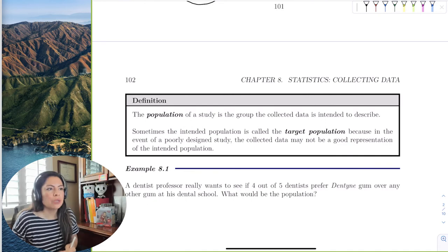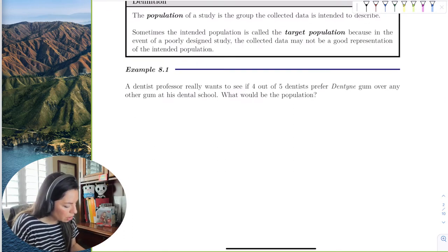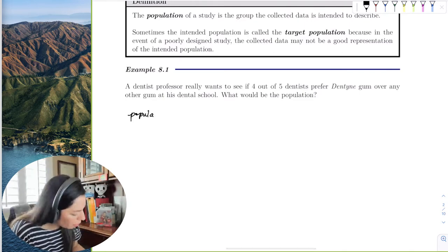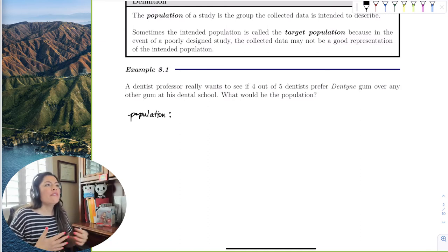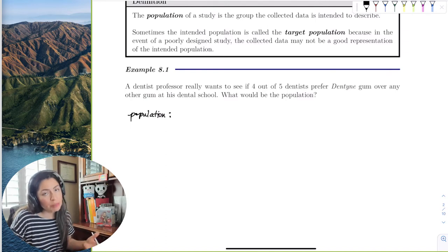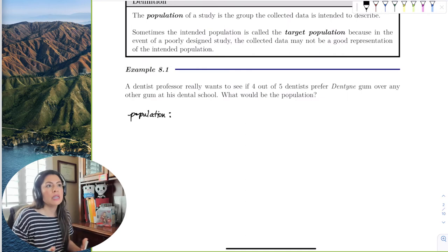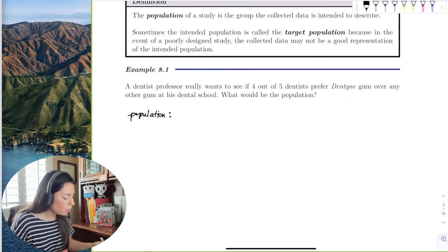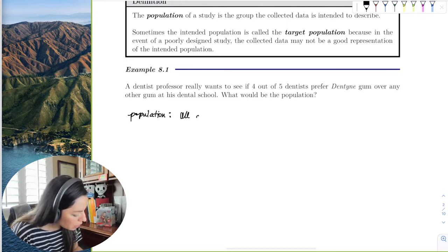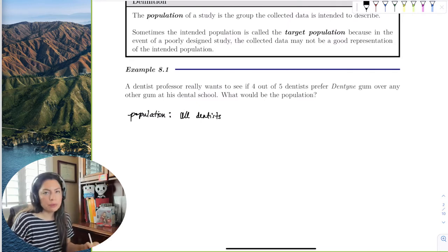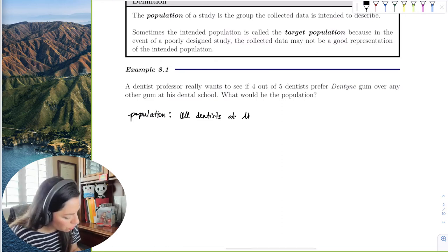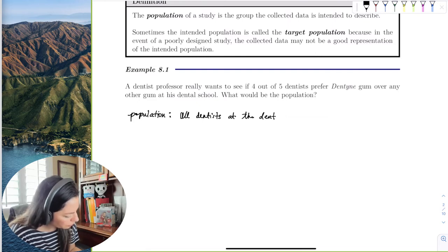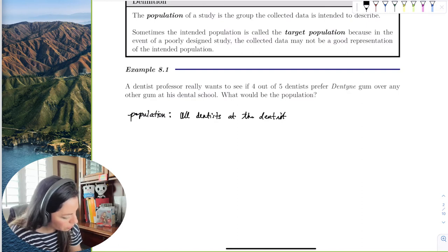For example, a dentist professor really wants to see if four out of five dentists prefer Dentyne gum over any other gum at his dental school. What would be the population? The population is everything - all dentists all over the world. So if you were a dentist professor, this person may not be a practicing dentist but actually is teaching students to be dentists. Where would he go to ask those questions? The population would be all dentists at the dental school that he works at or she works at.